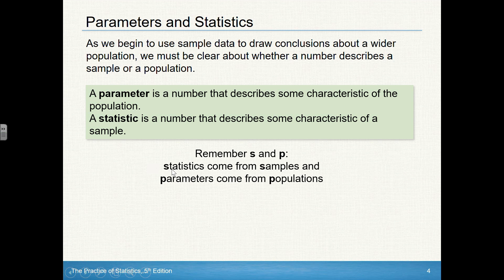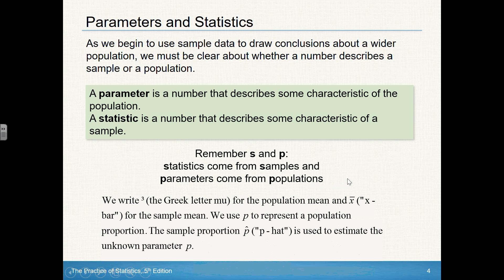A statistic comes from a sample; a parameter comes from a population. We know mu — that's going to be the parameter for mean, and x-bar is the statistic for the mean. We know that p is the parameter for population proportion, but p-hat is going to be the statistic from a sample. This p-hat we haven't seen before, but it's just like y-hat when we talked about linear regression — it is an estimated value for p.